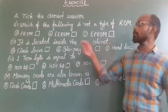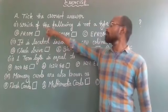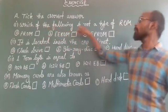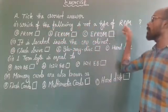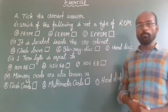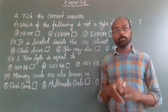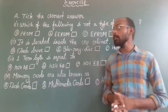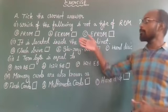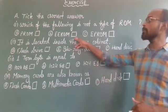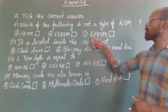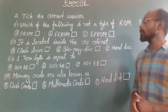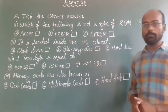Question number 1 is: which of the following is not a type of ROM? Option number A is PROM. Option number B is WEROM. And option number C is EPROM.